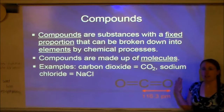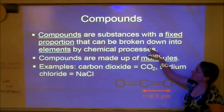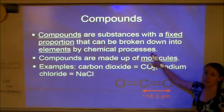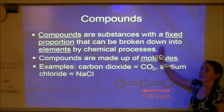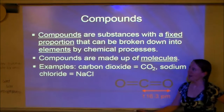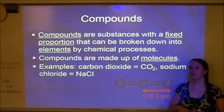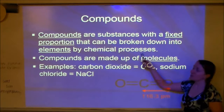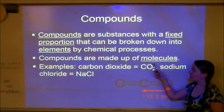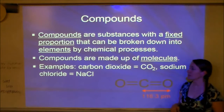Elements are made of one type of atom. Compounds, on the other hand, are substances with a fixed proportion that can be broken down into elements by chemical processes. Compounds are made of more than one element. Fixed proportion just means it's always the same ratio — water is always H2O, always two hydrogens and one oxygen. Compounds are always made of molecules — unlike elements, which can be atoms or molecules.